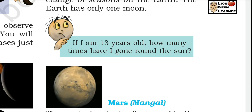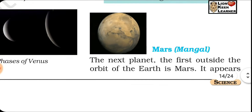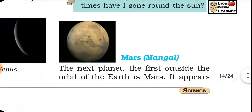If you are 13 years old, how many times have you gone round the sun? 13 years means you have completed 13 revolutions around the sun.